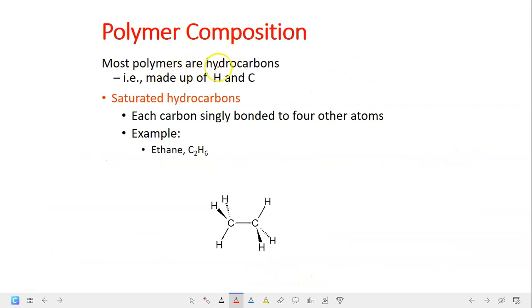Polymer is actually made up of hydrocarbons, most of them. So hydrocarbons is composed of hydrogen and carbon. So there are two types of hydrocarbons. The first one is saturated hydrocarbons in which each carbon are singly bonded to four other atoms.